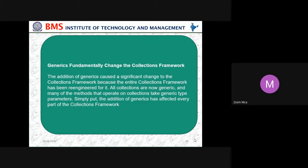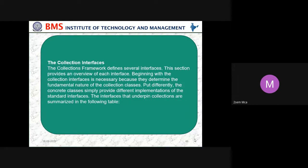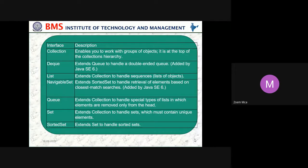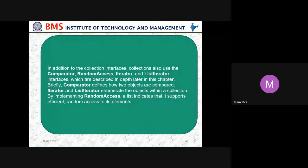The generic fundamentals and the collection framework are put together to see what re-engineering was done. Collection interfaces include Queue, Collection, List, NavigableSet, Queue, Set, SortedSet — all of these are used. If you want to sort something, you can use SortedSet. There are also Comparator, RandomAccess, Iterator, and ListIterator interfaces. Comparator is used to compare two objects and see whether they are the same.